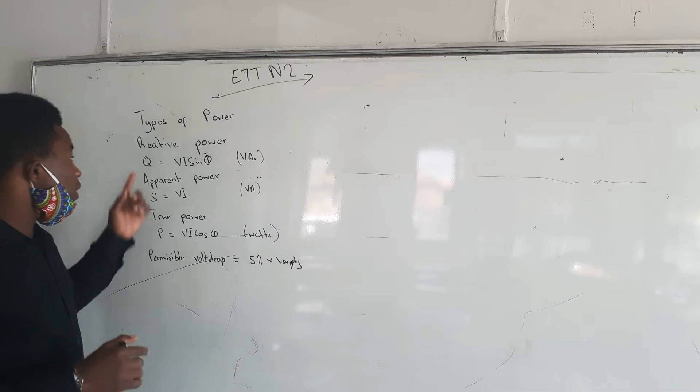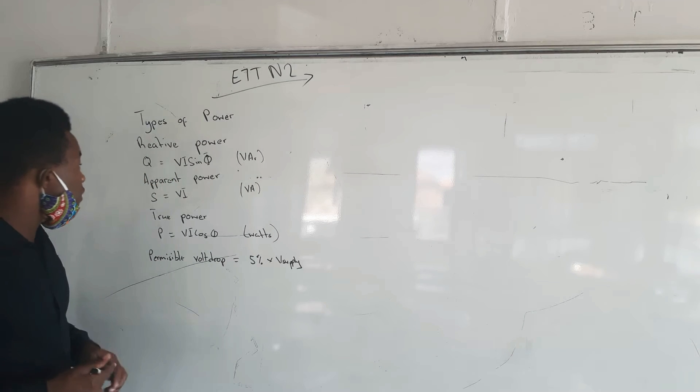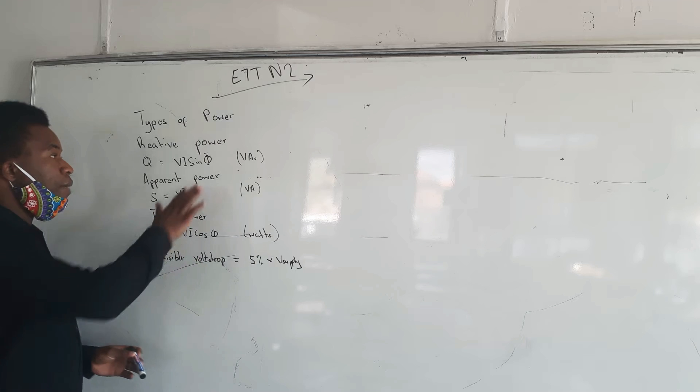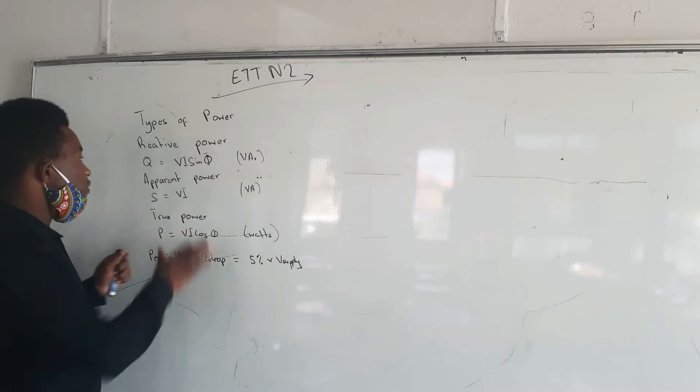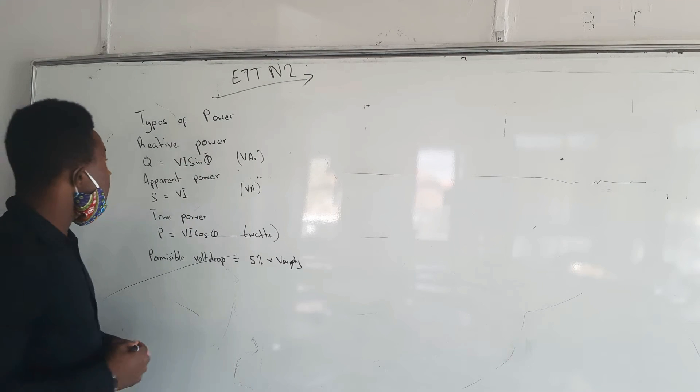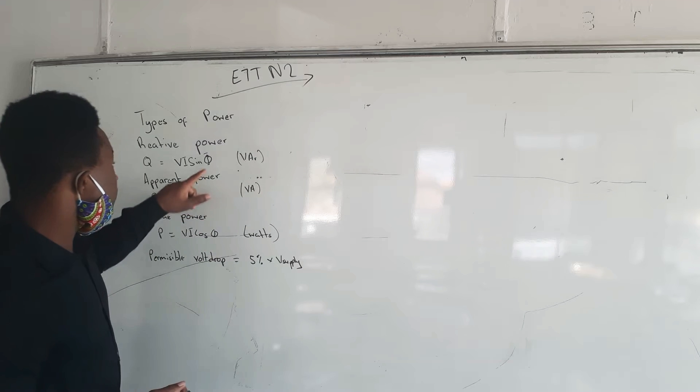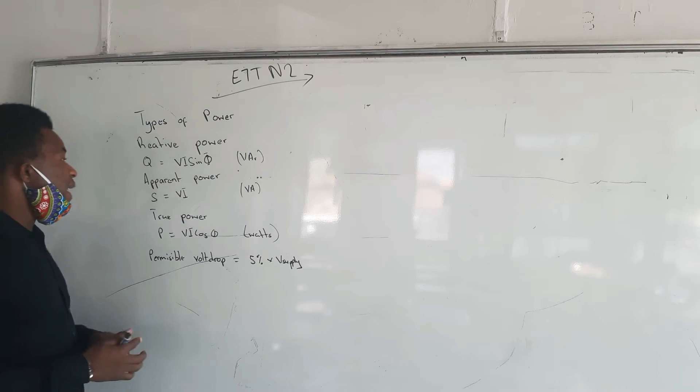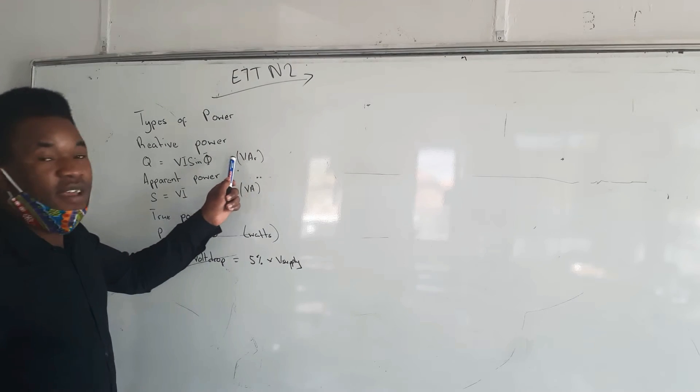The formula to calculate reactive power Q is V multiplied by I multiplied by sin theta, where V is voltage, I is current, and sin theta where you are given an angle. It's measured in VAR.